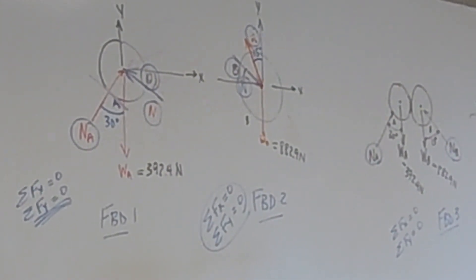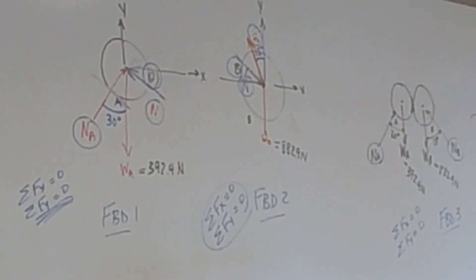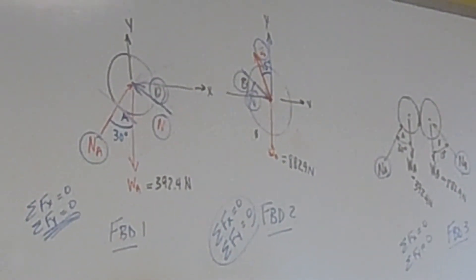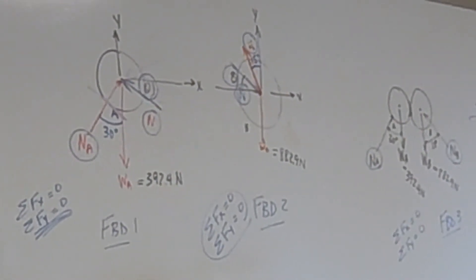Because using free body diagram three, I could solve for those two unknowns, NA and NB. Then, I would need another free body diagram, right? Either one or two, to solve for N.